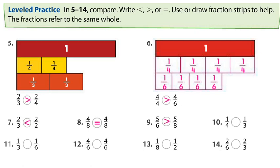Question 10: is 1 over 4 less or greater than 1 over 3? It is less than, because 1 over 3 has the smaller denominator, so 1 over 3 is the greater fraction. Question 11: is 1 over 3 less or greater than 1 over 6? Yes — 1 over 3 is greater than 1 over 6 because 3 is smaller than 6.